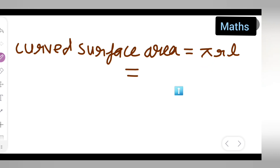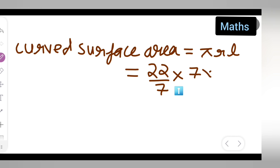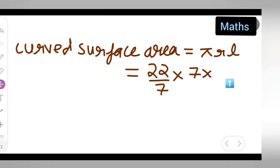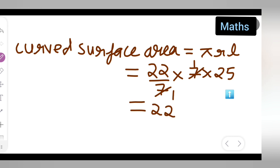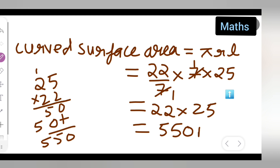The formula for curved surface area is πrl. The value of π is 22/7, multiplied by radius 7 meters, multiplied by slant height 25 meters. The 7s cancel out, leaving 22 × 25. Calculating: 22 × 25 = 550. So the curved surface area is 550 meter square.